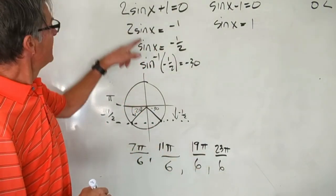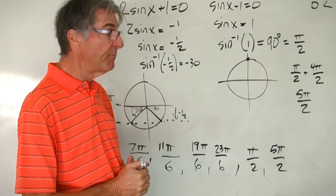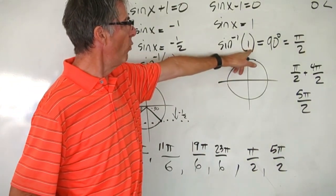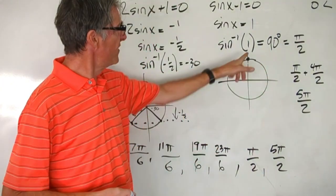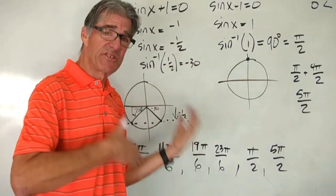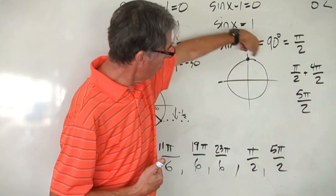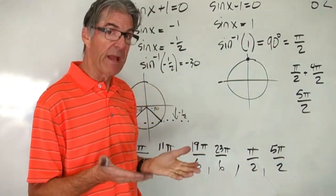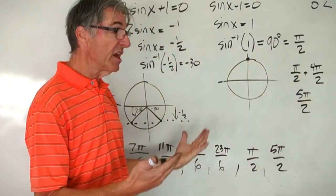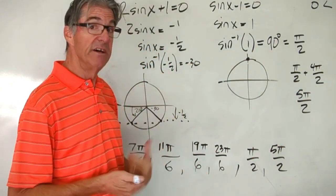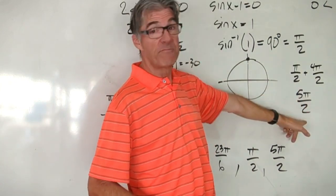Now for sine x equals 1: the inverse sine of 1 in degrees gives 90 degrees — that's at the top of the unit circle. When sine of something equals 1, you know you're at one of the four axis points on the unit circle. That's pi over 2 radians. The second solution adds 2 pi: pi over 2 plus 4 pi over 2 equals 5 pi over 2.